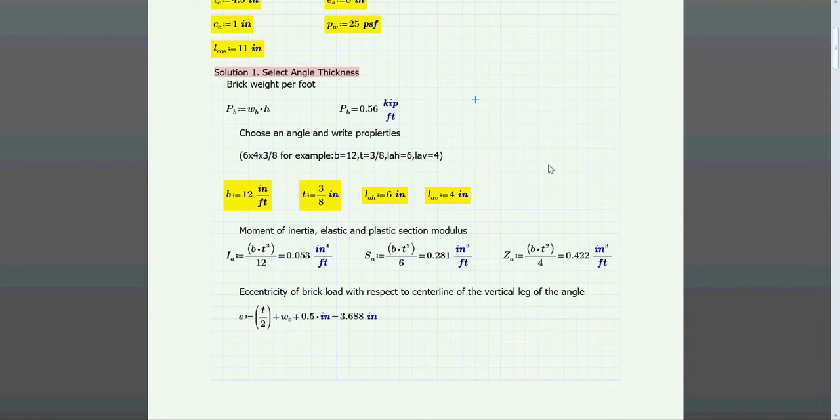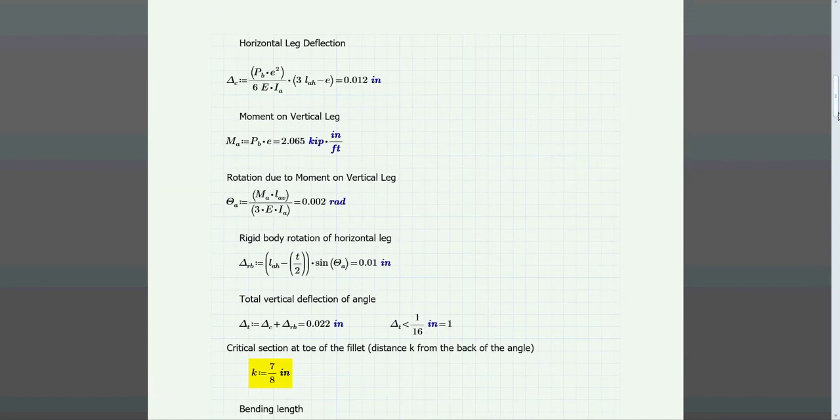Here we grab the property from the angle and then we use the formulas to obtain the parameters—the moment of inertia and stuff like that. Then we get the deflection, the moment, and the rotation due to this moment.